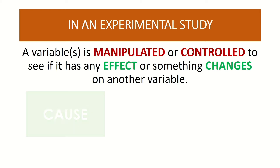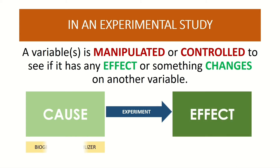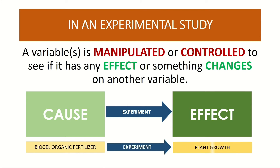Take a look at this illustration. In an experimental study, the researcher thinks of a variable that will cause a change to another variable. For example, a researcher may use a biogel organic fertilizer to see if it has any effect on the plant growth by conducting an experiment.